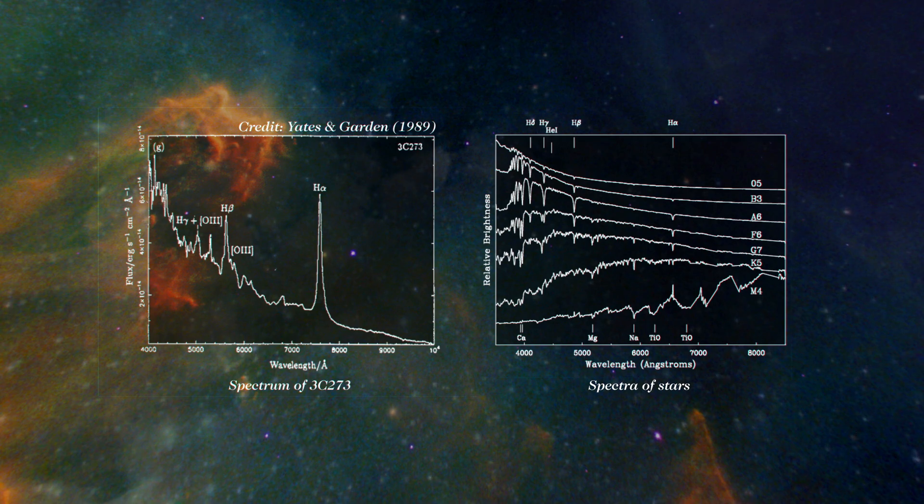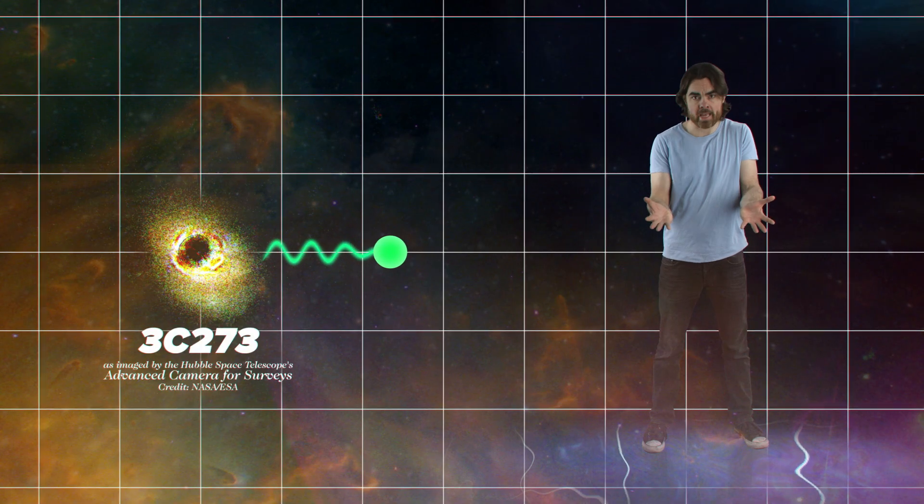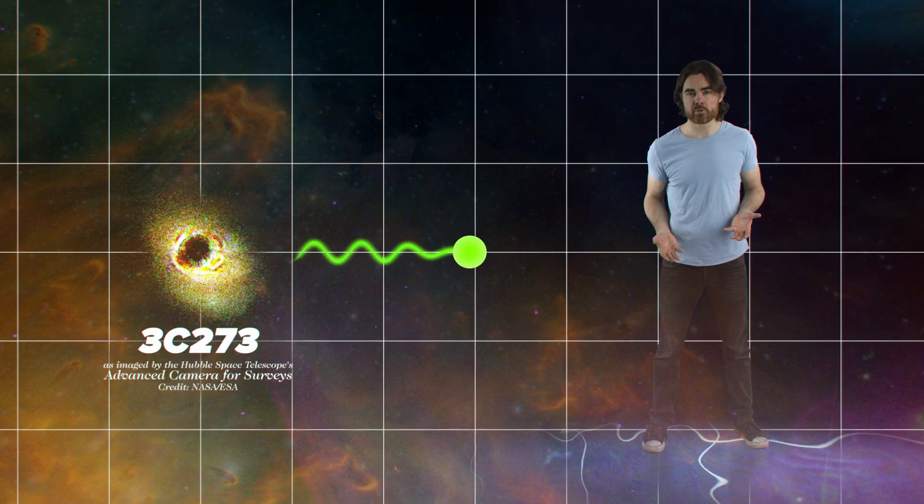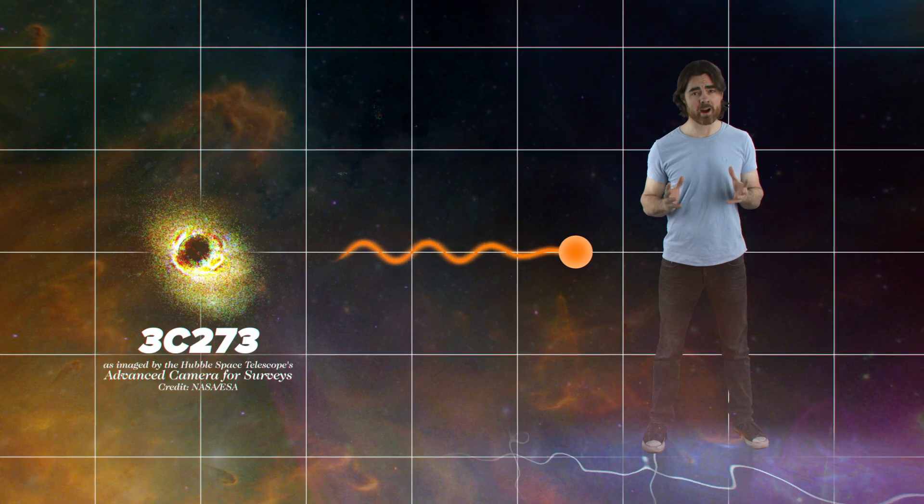But what was so different? For one thing, its spectrum was redshifted. The wavelength of its light stretched out as those photons travelled through the expanding universe. That put 3C273 very far away.